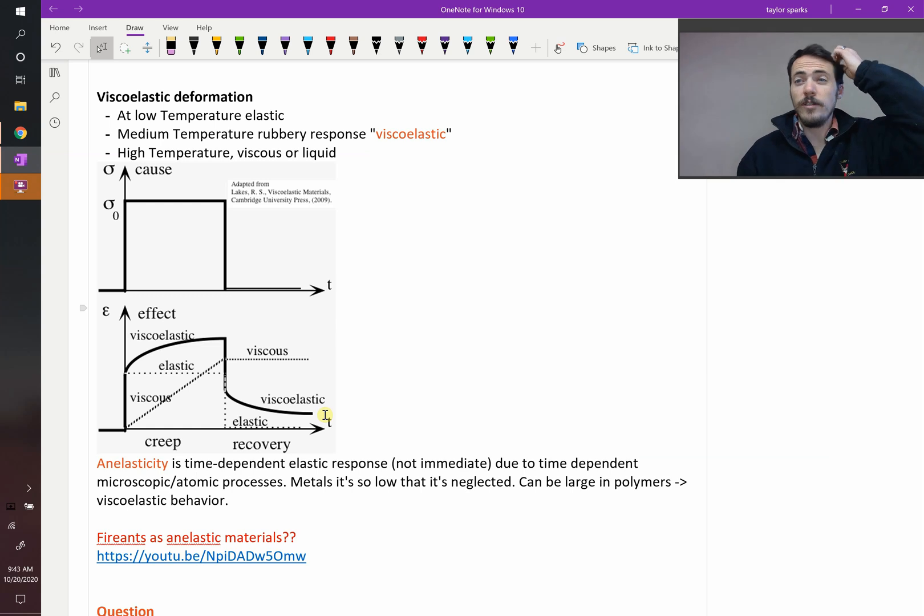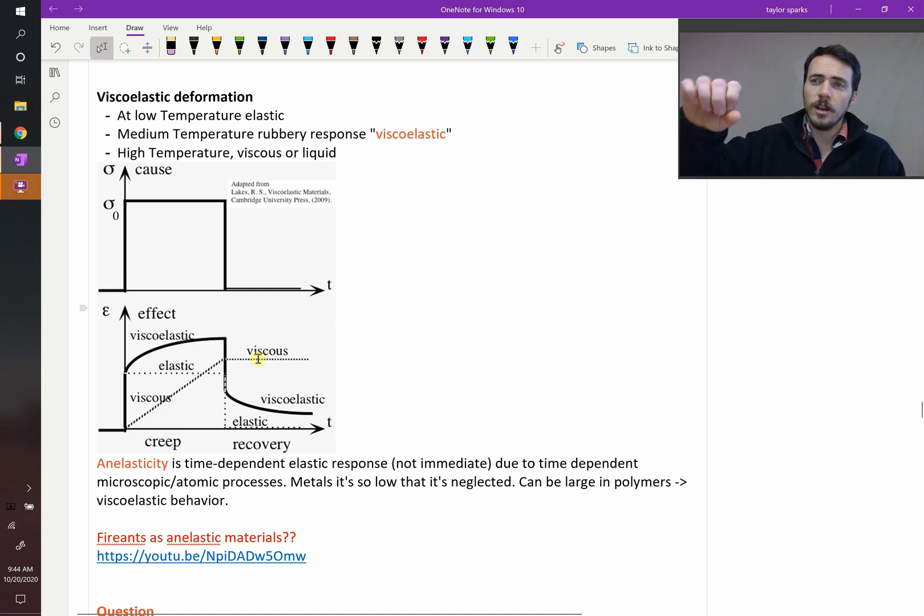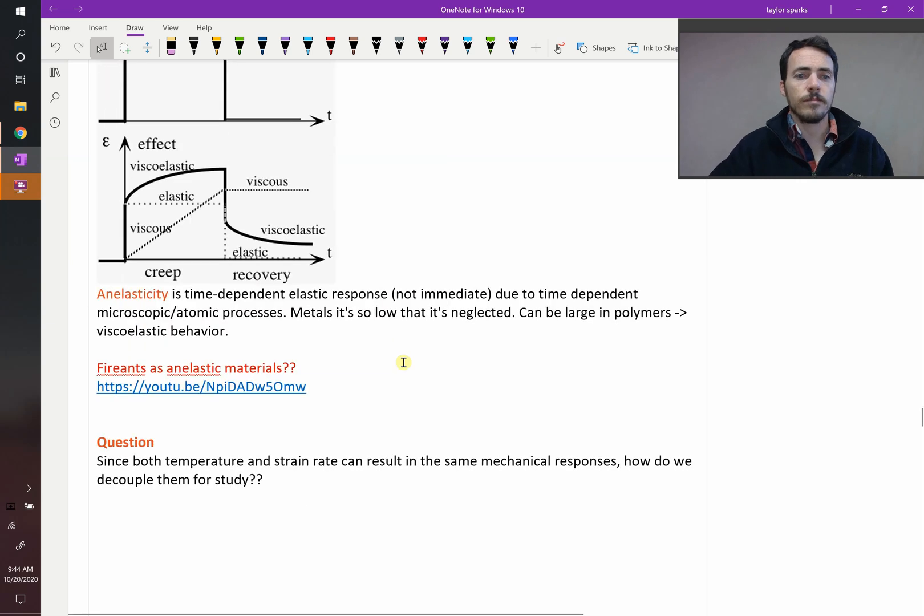Now, you can also get viscous behavior. In a viscous behavior, the material flows as if it was a liquid. So you apply the stress and your strain just slowly increases until you stop the stress and then it just stays there. So think of honey. As you pour it, it's just gonna keep on slowly forming and then when you take away gravity acting on it, it just stays there. It doesn't bounce back up into the bottle. That would be a viscous material, something that is now basically a liquid. It has a liquidy type response to it.